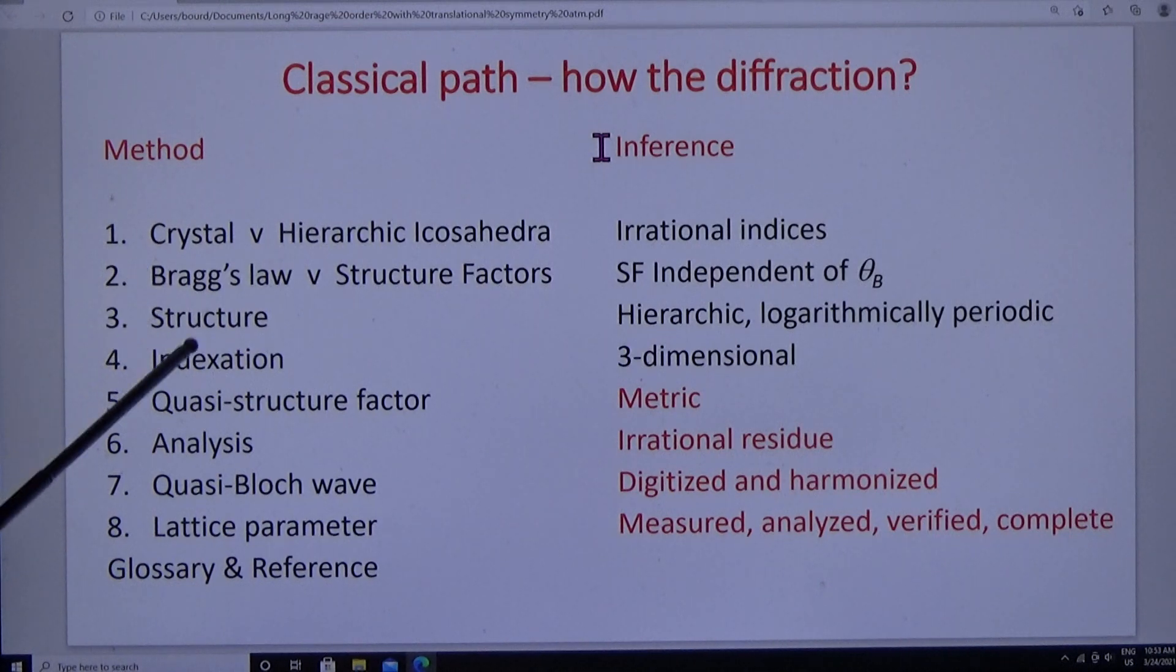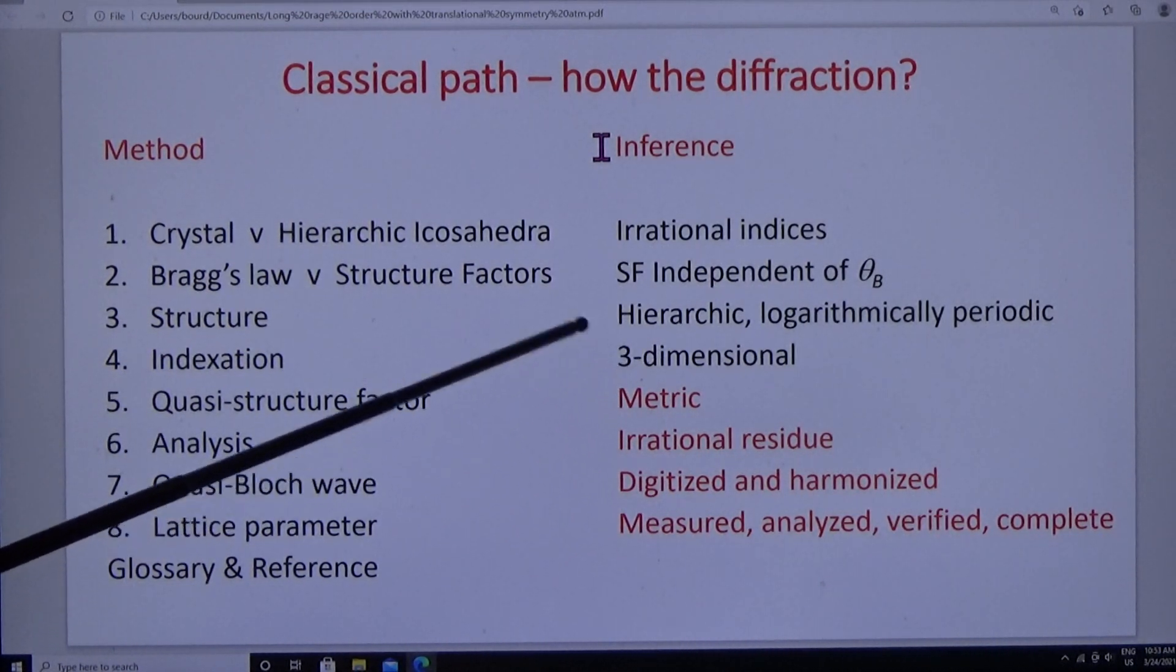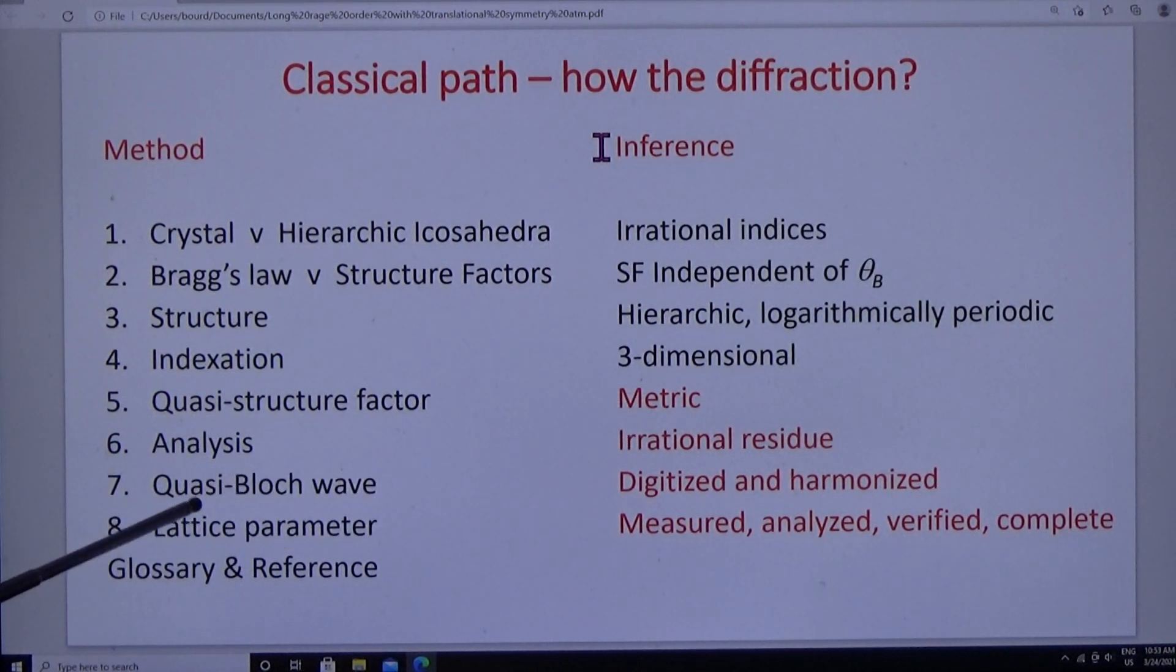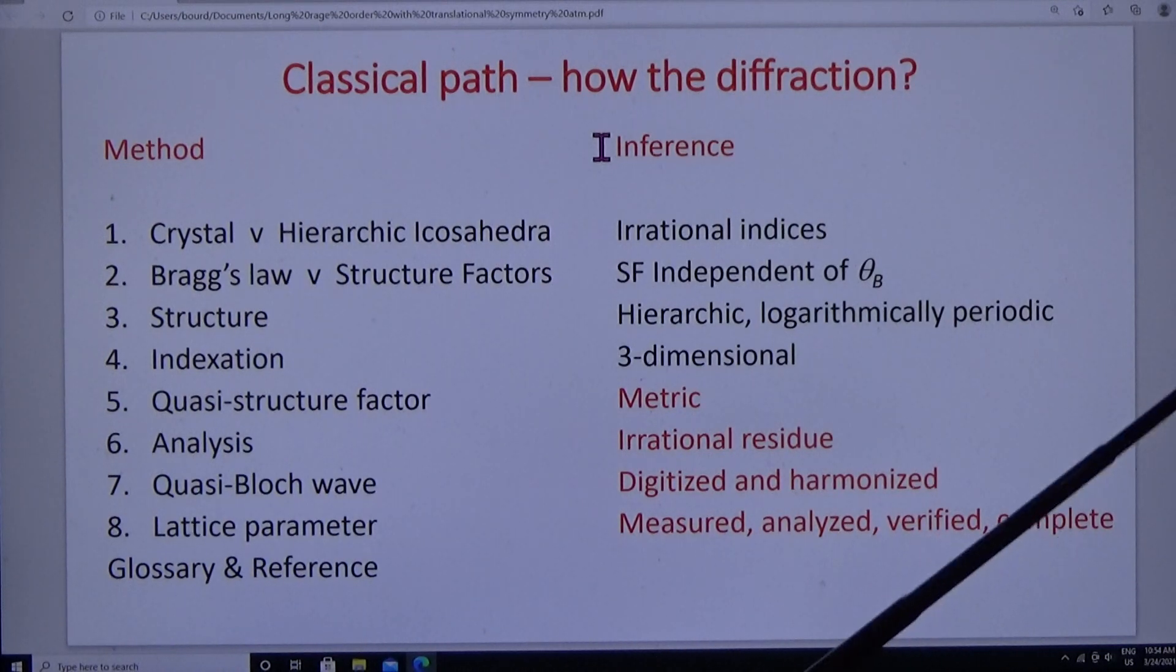I'm going to begin with structure and indexation, go onto the quasi-structure factor and metric, then analyze it and find the irrational residue and illustrate it with the quasi-Bloch wave, digitized and harmonized, and finally the lattice parameter: measured, analyzed, verified, complete.